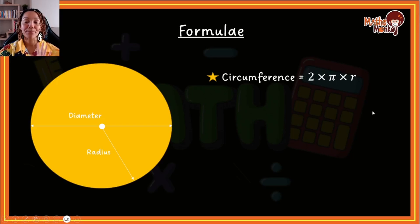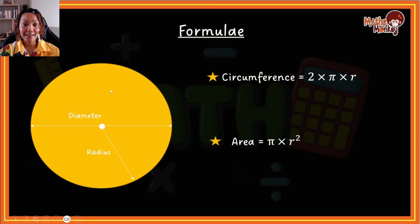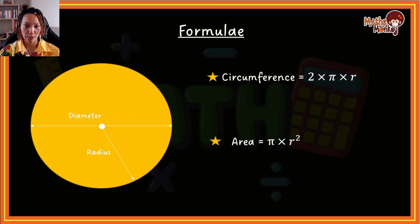Now the area formula is literally just taking this two and moving it to the square of the radius. So to calculate the area — the entire space a circle takes up — it equals pi multiplied by radius squared. Let's do an example so that you can see how we apply this formula. So let's say we had a diameter of 10, and we were asked to calculate the circumference and the area.